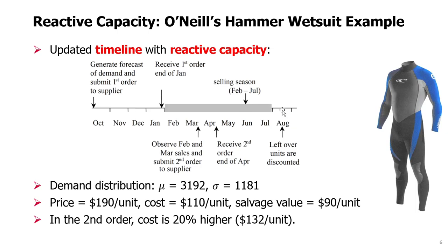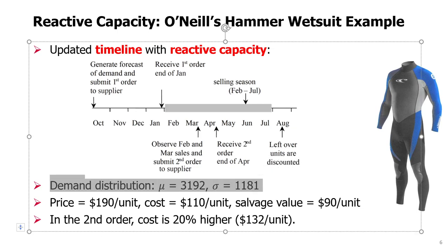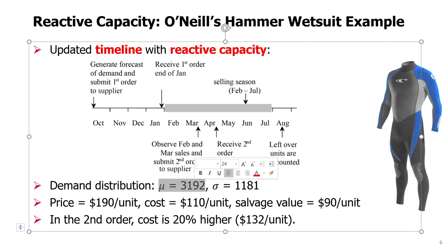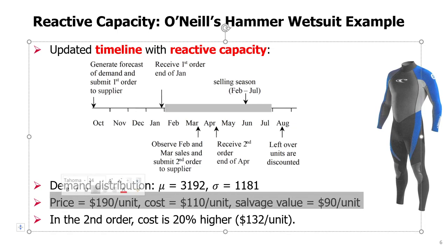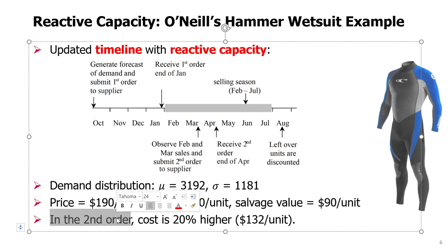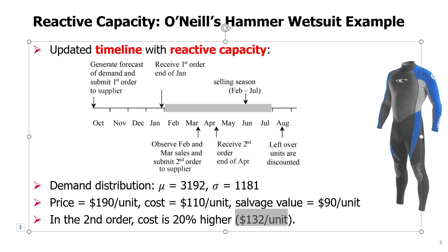We might still have leftover units. The parameters are as before: demand is represented by a normal distribution with a given mean and standard deviation. We also have price, cost, and salvage value as before — $190, $110, and $90. One new thing is that in the second order, the cost is no longer $110 per unit — it is 20% higher. We pay a premium for this reactive capacity, this quick response. The delivery time is just one month, and we pay $132 per unit.